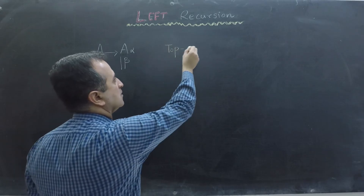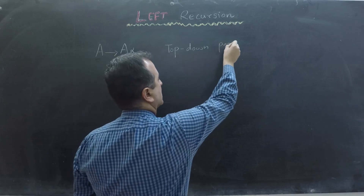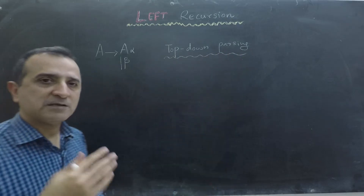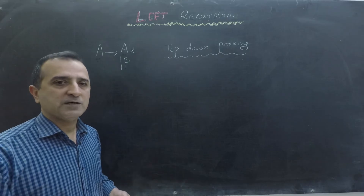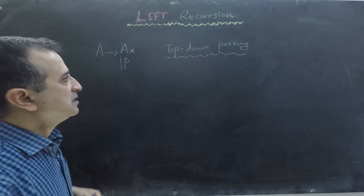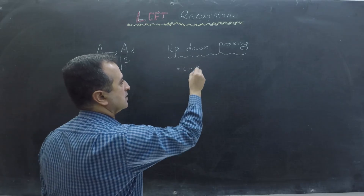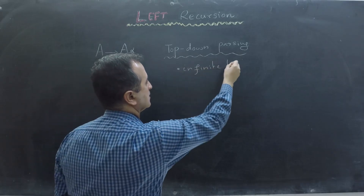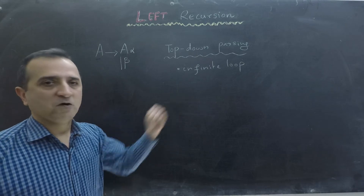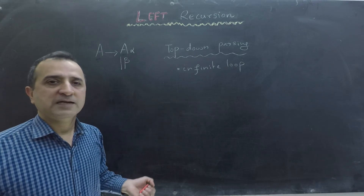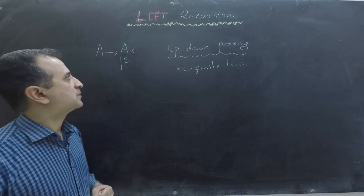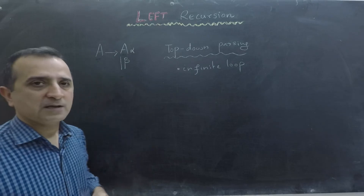There is a kind of parsing called top-down parsing. In top-down parsing we start from the start symbol of the context-free grammar and try to derive towards the input string. In such a parsing technique, left recursion leads to an infinite loop. So a grammar that has left recursion must not be used with top-down parsing. However, it is not that difficult to remove left recursion and make that grammar suitable for top-down parsing.